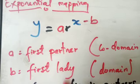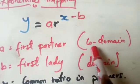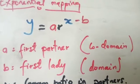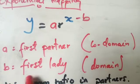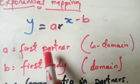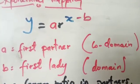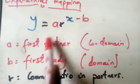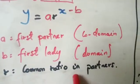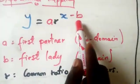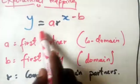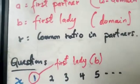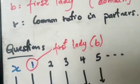In the formula y = a·r^(X−B): a is the first partner (first value in the range), r is the common ratio among the partners, and B is the first lady (first value in the domain). X and Y are like the parents of the house — they are always there and don't change.